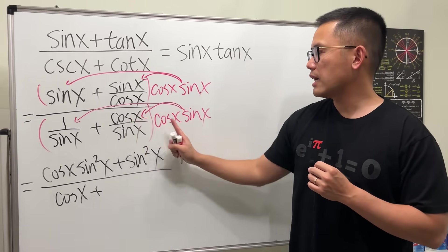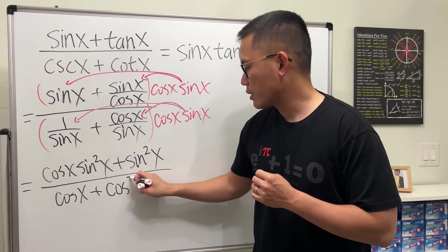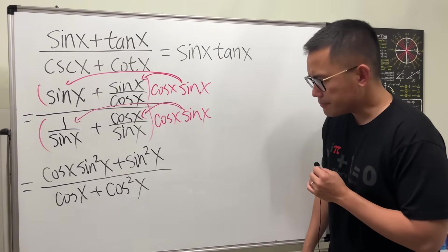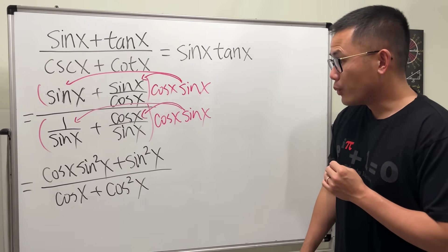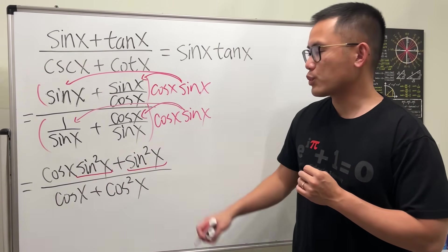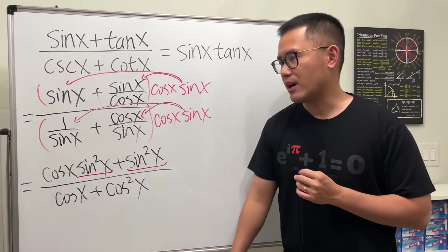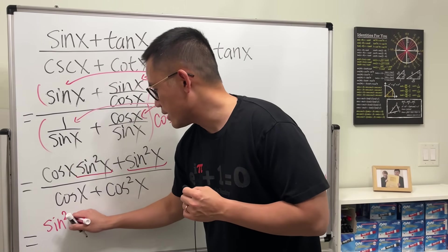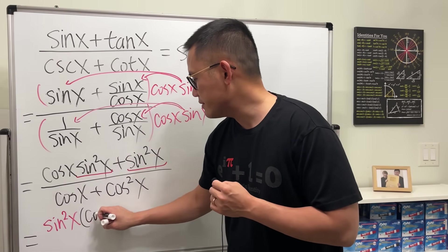All right, that's what we have. What can we do next? Notice on the top we have sine squared x. We can factor it out: sine squared x in the front, and then we have cosine x left, plus one.